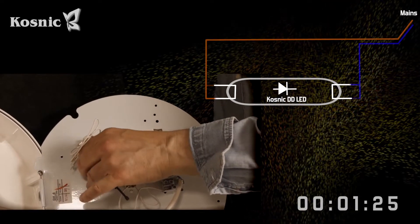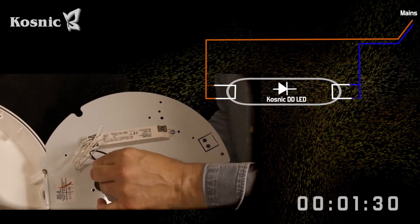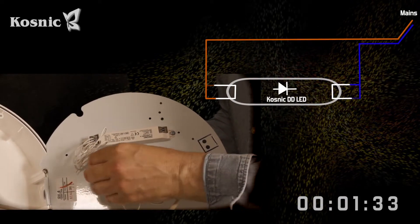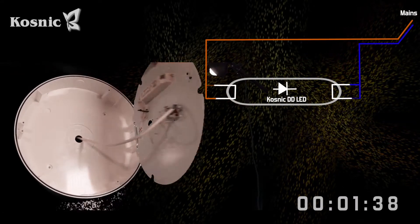The ballast could be removed or in this case just tidied away. The LED DD has its own self-contained driver with sensing options. This one has a microwave PIR and lux level sensing.